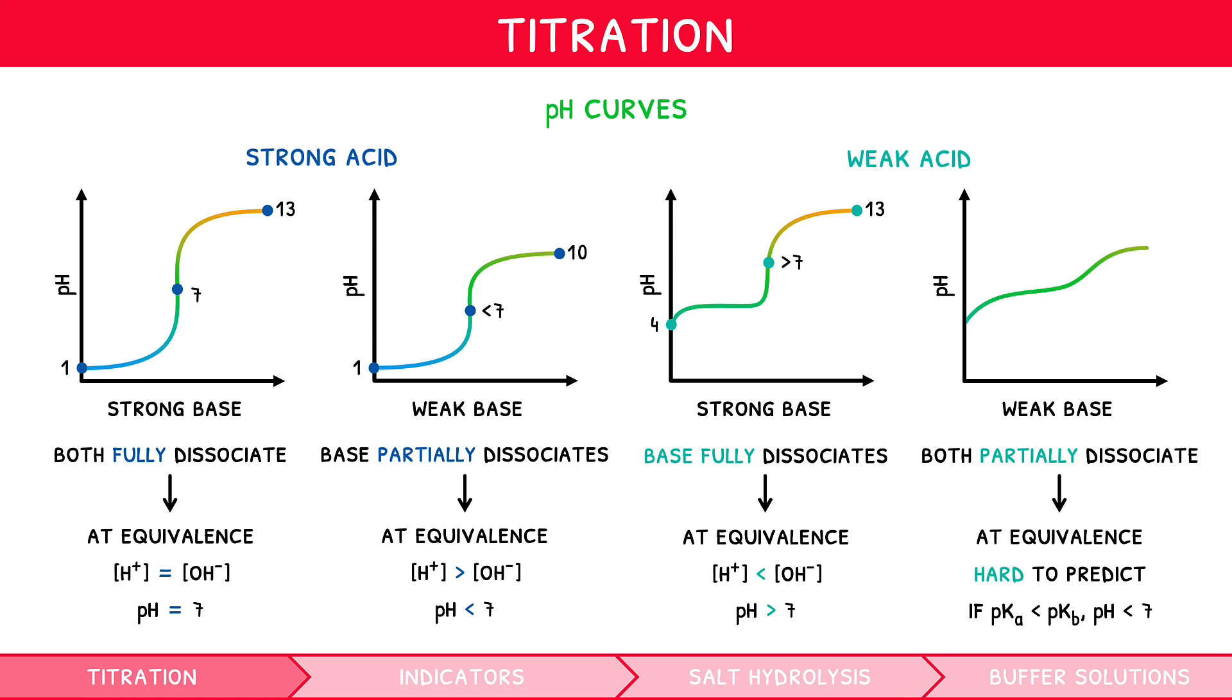An exam trick sometimes used is switching the apparatus so that the acid is added from a burette to the base in a conical flask. In this situation, the equivalence point and pH do not change. However, the graph is flipped.